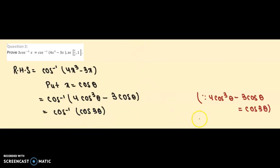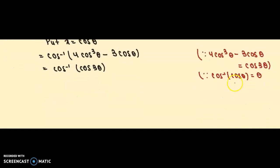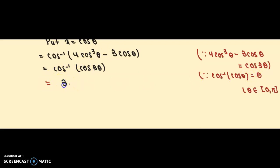We use the formula: cos⁻¹(cos θ) = θ, which holds when θ lies between 0 and π. Since 3θ lies between 0 and π, applying this formula gives us cos⁻¹(cos 3θ) = 3θ.